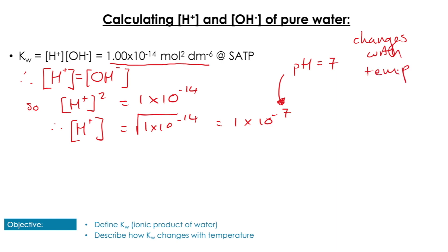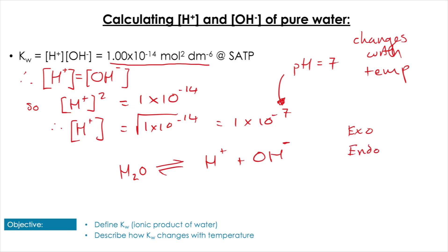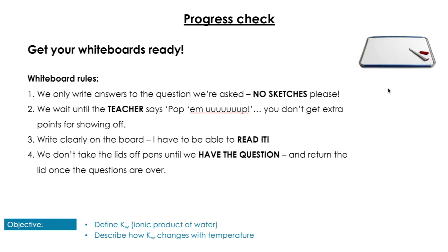This value does change with temperature because of the nature of the dissociation reaction. Think of it simply as H₂O ⇌ H⁺ + OH⁻. Depending on whether the reaction is endothermic or exothermic, it will shift direction when temperature changes. This is an endothermic reaction left to right, so increasing temperature increases the concentration of H⁺ and OH⁻. We'll come back to that idea shortly.